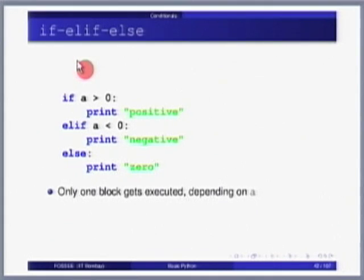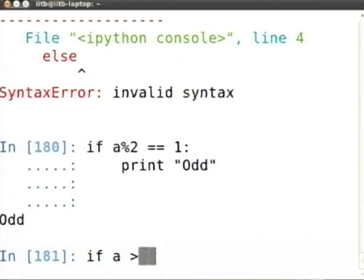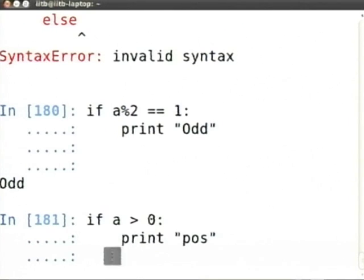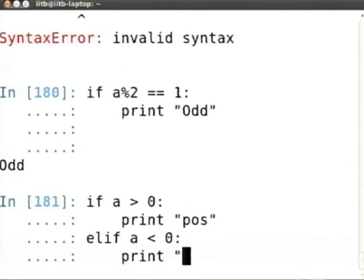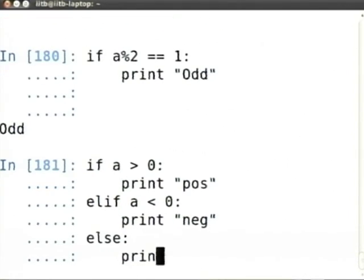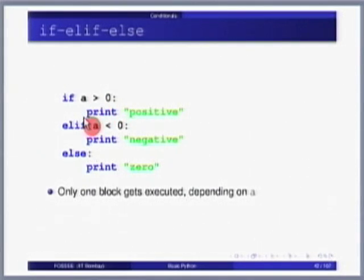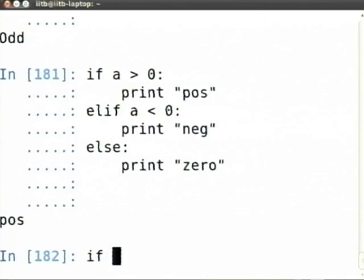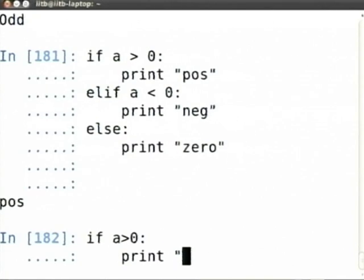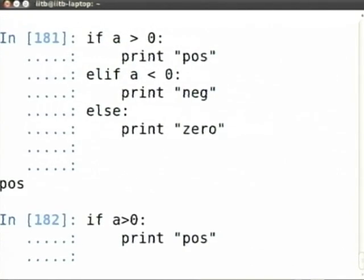But often you will say if, else if. So instead of else if there is a condition, there is a thing called elif, it is kind of like bash. So you say if a greater than 0, then positive, elif a less than 0, then negative, else then 0. Only one of the blocks gets executed. Very straightforward, again remember indentation, semicolon, everything indented one to the right is in that scope.